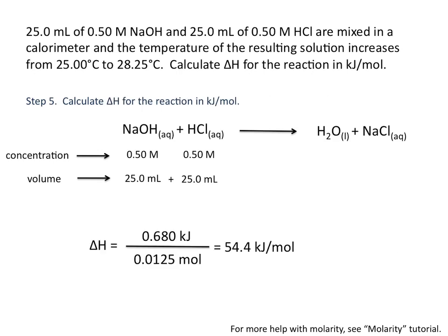Our last step is to calculate delta H for the reaction in kilojoules per mole. So we'll use each of the values that we just calculated. 0.680 kilojoules divided by 0.0125 moles. That gives us units of kilojoules per mole. This tells us that 54.4 kilojoules of heat are transferred per mole of reaction.